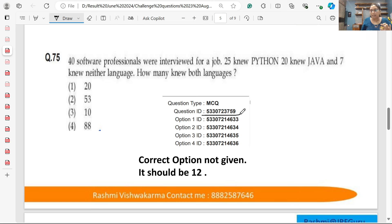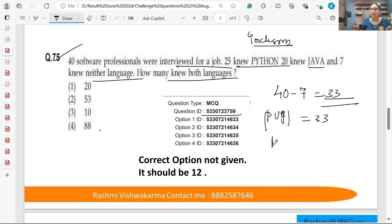Second question, ID 759. In this question, 40 software professionals were interviewed for a job. 25 knew Python, 20 knew Java, and 7 knew neither language. How many knew both languages? Basically, this is an inclusion-exclusion question. Here, 7 knew neither, so we can do 40 minus 7, which gives us 33. P union Java equals 33. Number who know Python is 25, those who know Java is 20.